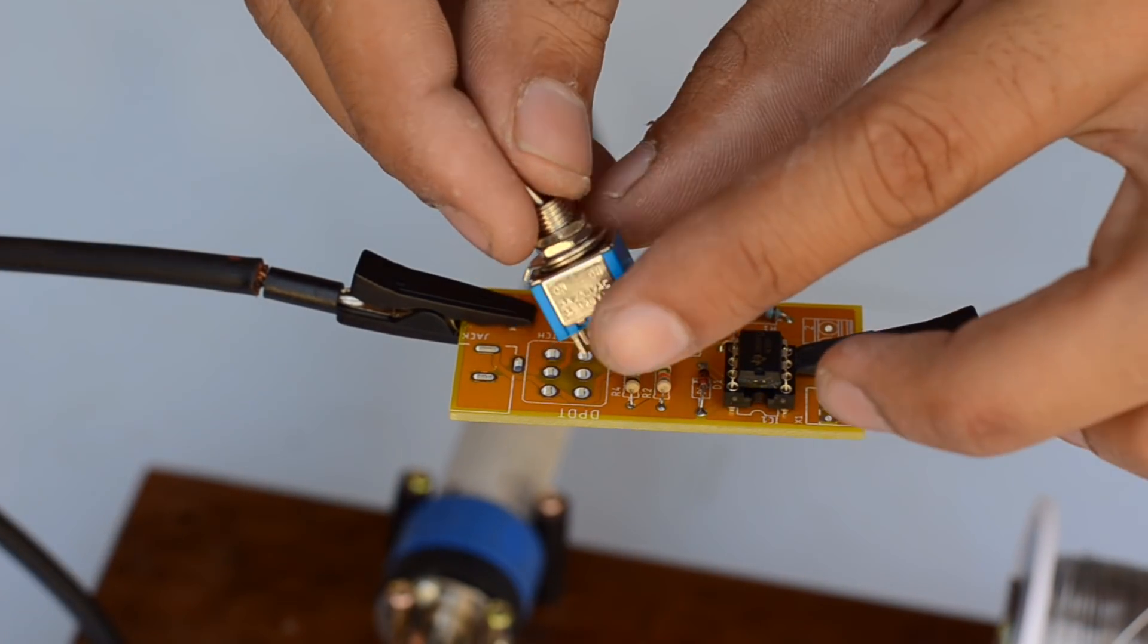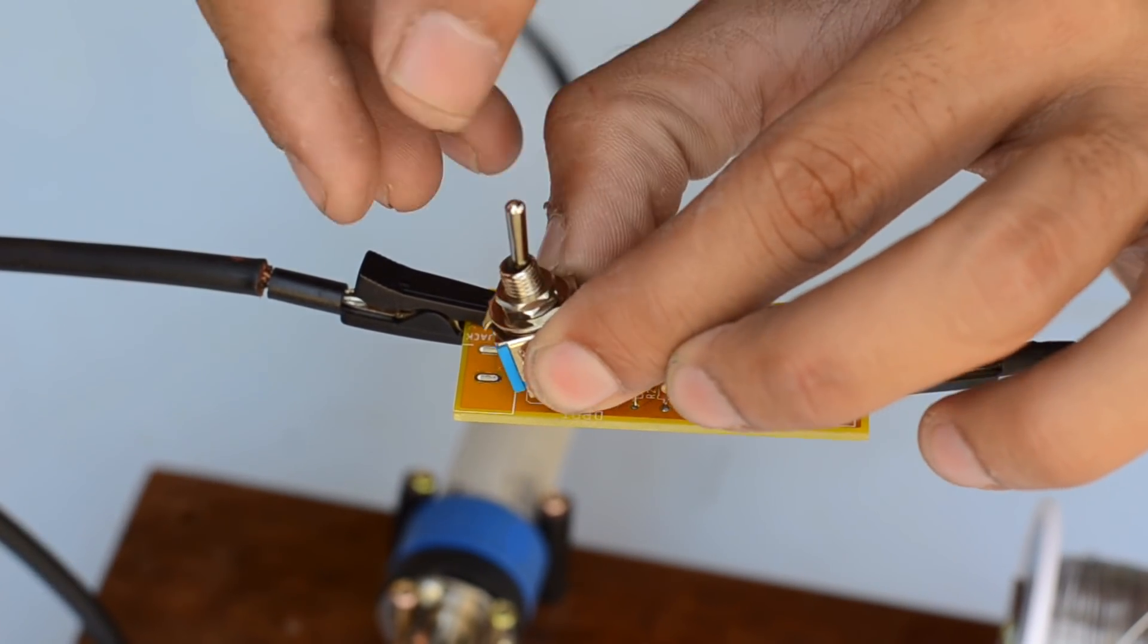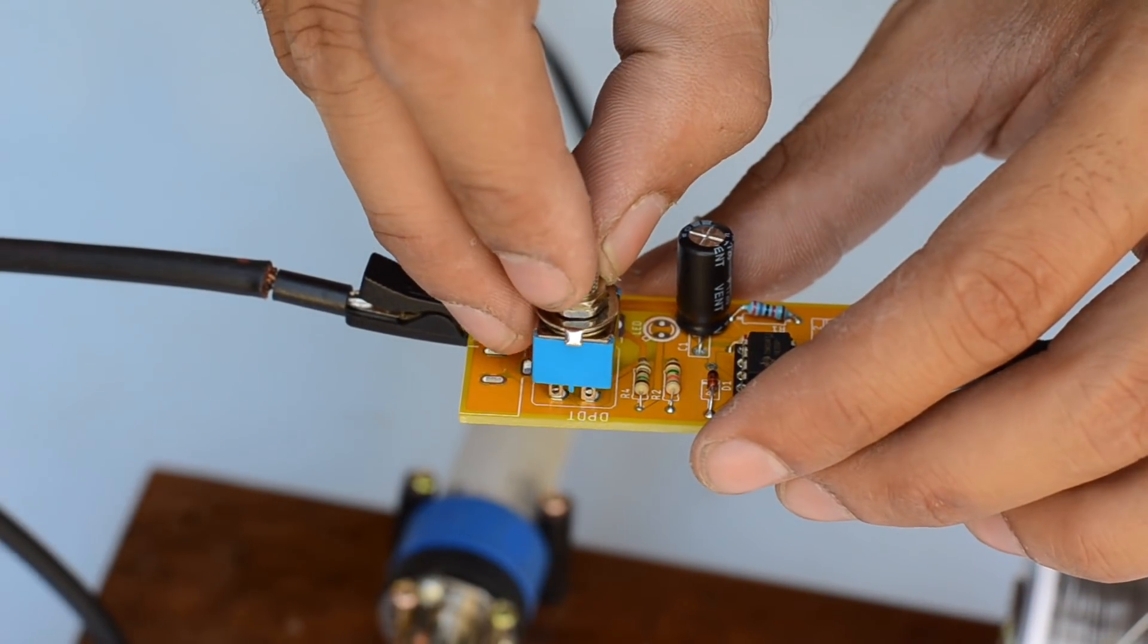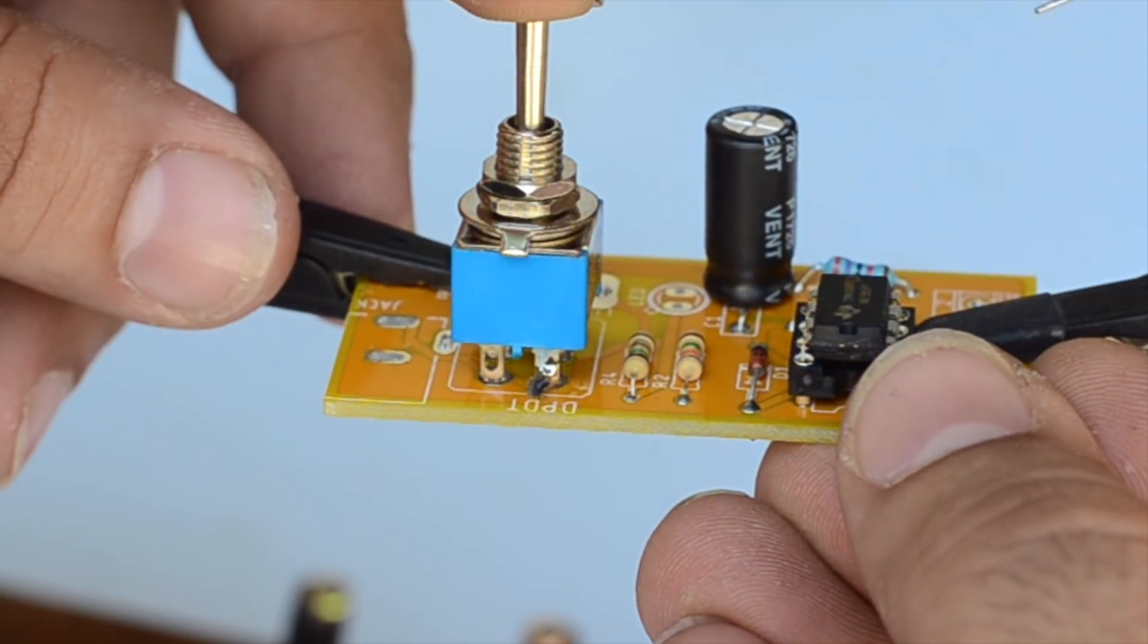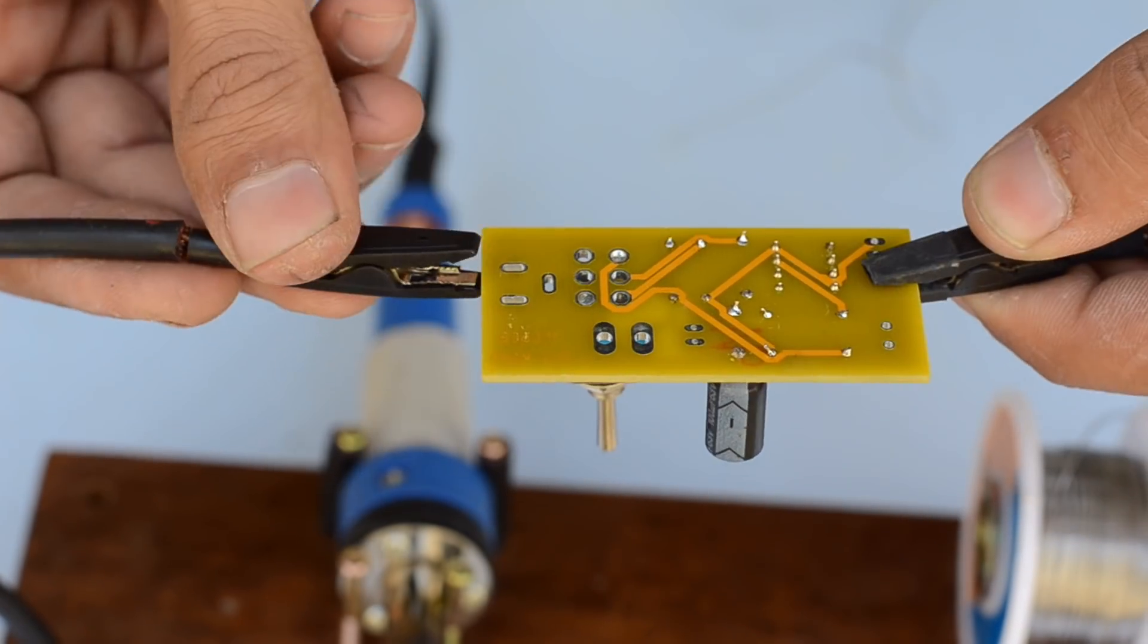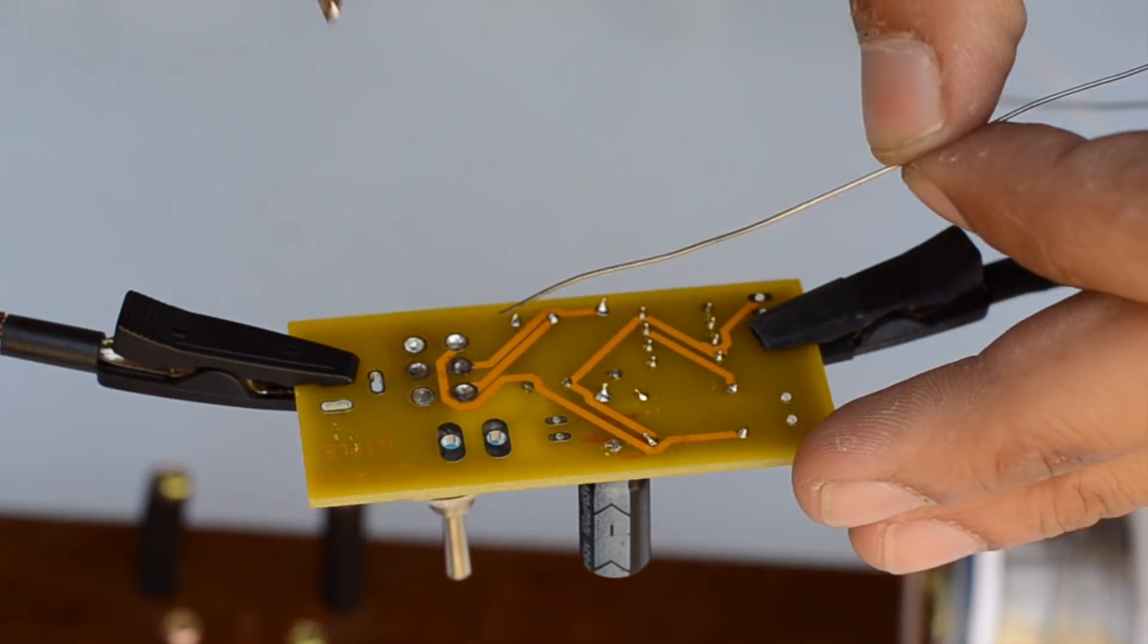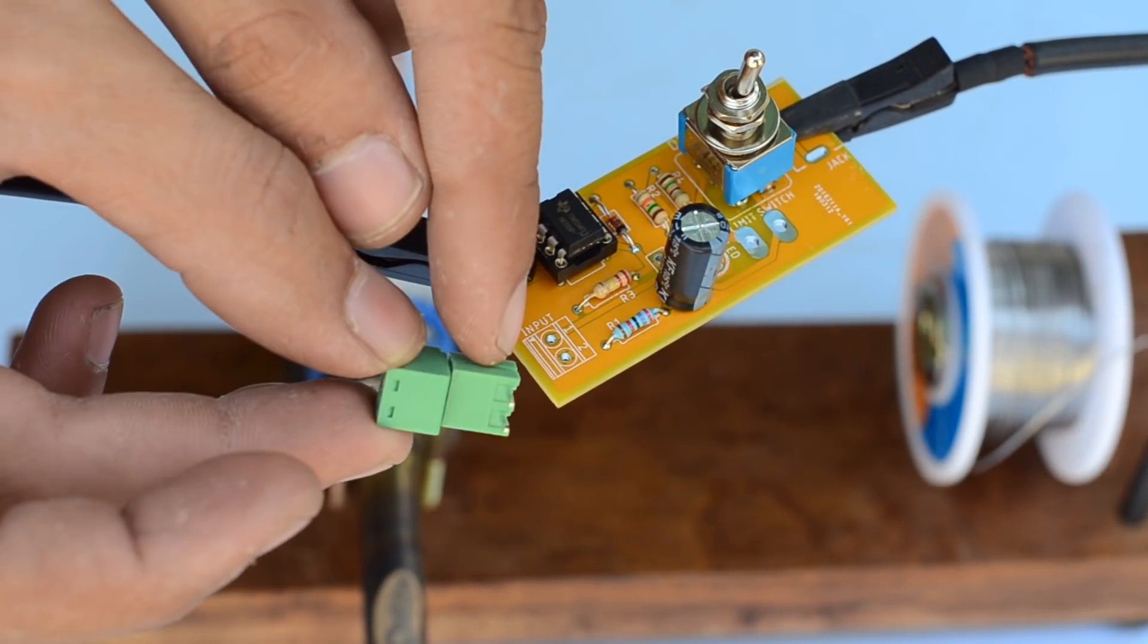Here I've used a double pole double throw switch which reverses the direction of servo motor, causing the servo arm to retract inside the box. I have used a PCB connector to connect the power from the battery pack to the driver board.